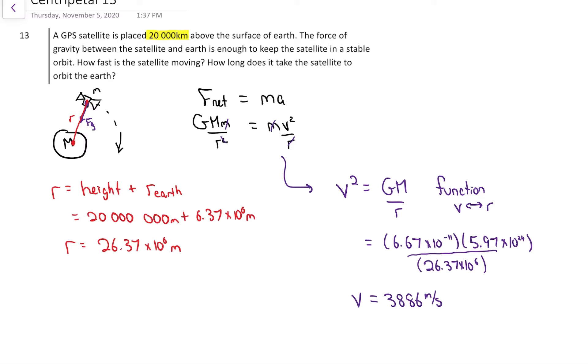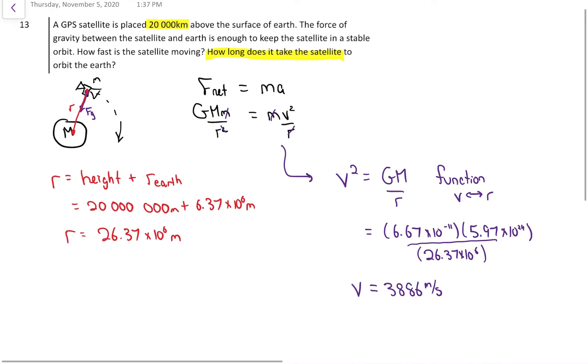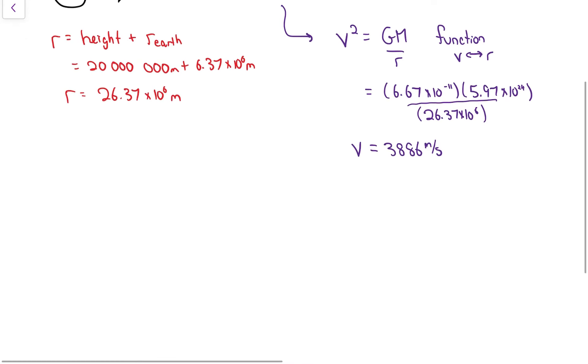To figure out the time period, well, to figure out how long it takes to orbit the Earth, I'm going to call that time period kind of connecting it back to periodic motion or waves and sound from last year. It's kind of like what we did in the rubber stopper lab. It's going at a constant speed in a circle. So we can say that the d it travels in one orbit is 2πr. And the time it takes for that is the time period.